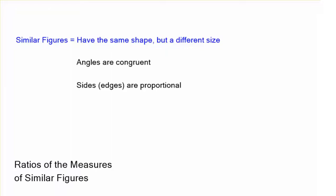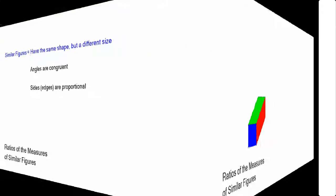This video is all about the ratios of the measures of similar figures. Similar figures have the same shape but a different size. Their angles are all congruent, but their sides are going to be proportional.